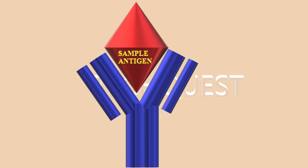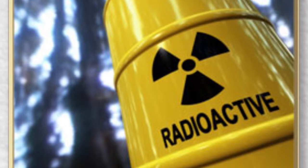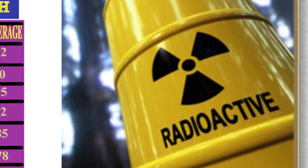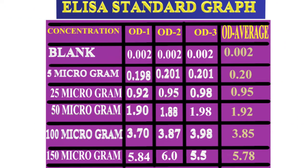Before the ELISA method, radioimmunoassay was used because it can detect nanogram or microgram levels, but the radiation was not safe. Engvah and Perlman described ELISA in 1971. It is a type of enzyme immunoassay used in quantitative and qualitative methods to detect a specific target in the sample.